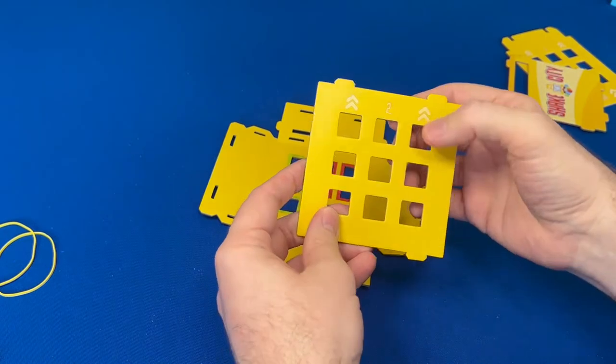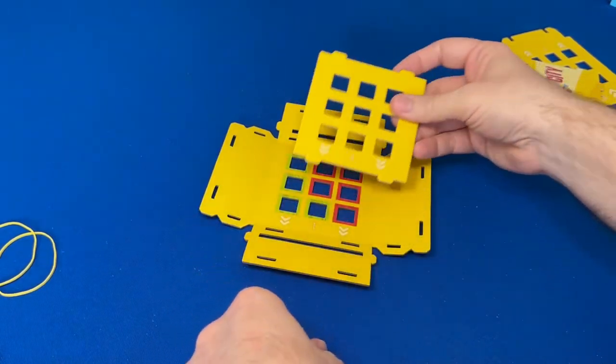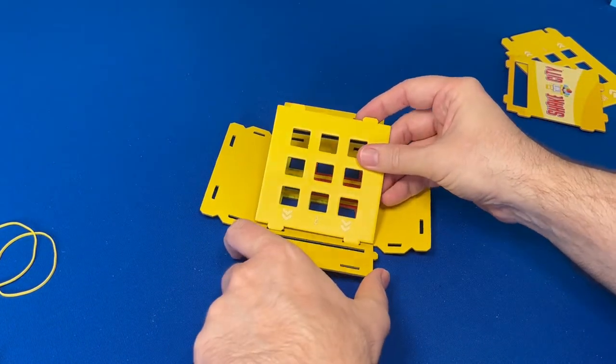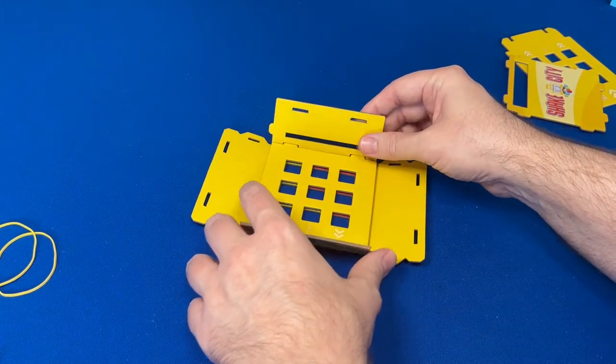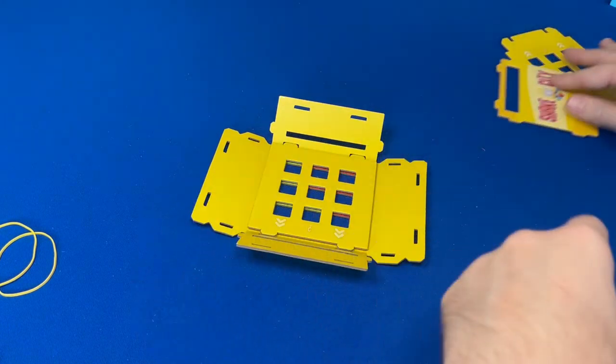Find piece number two and lay it into the base so that the arrows are all facing to your left, the same direction as the base. Slightly fold up the two sides of the base to line up the tabs of piece two with the bottom slots of the base, but don't fold the sides all the way up yet.